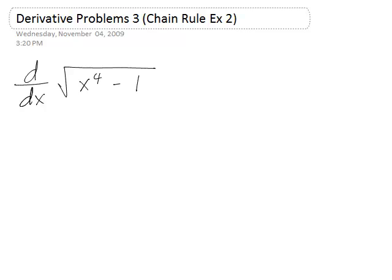To take the derivative of square root of x to the 4th minus 1, you notice that x to the 4th minus 1 is placed underneath the square root, so this is a function composition.